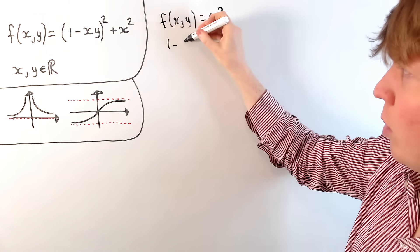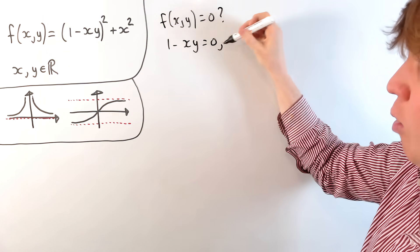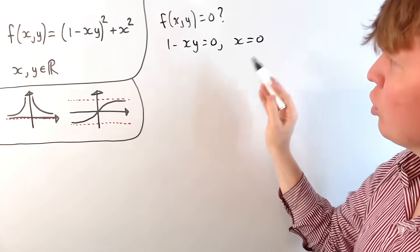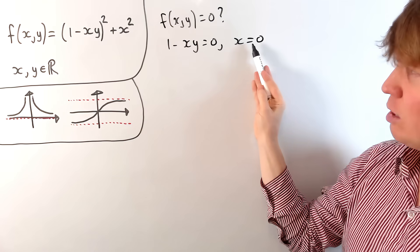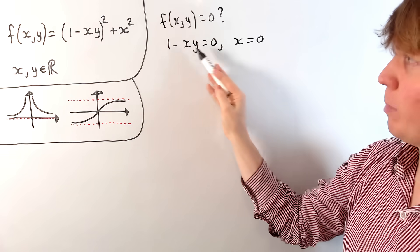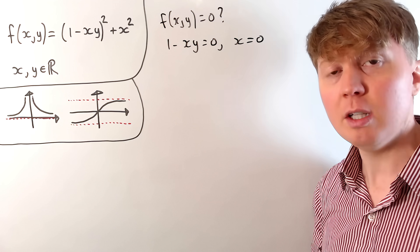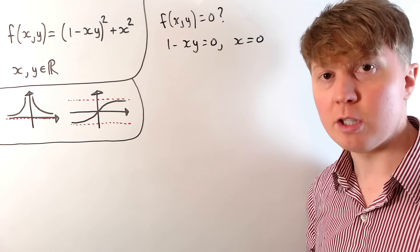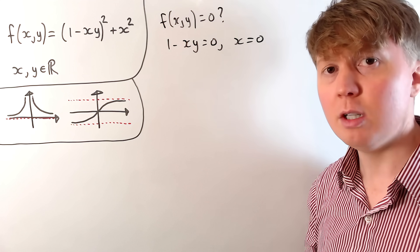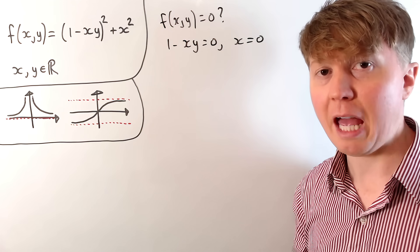If f(x,y) = 0, each of the two terms would have to be 0, since both are greater than or equal to 0. So you'd need 1 - xy = 0 and also x = 0. But if we make x = 0, then our other equation becomes 1 - 0 = 0, which is impossible. So if you make one of the terms 0, it forces the other one not to be 0. So unfortunately, this function doesn't actually have a minimum.